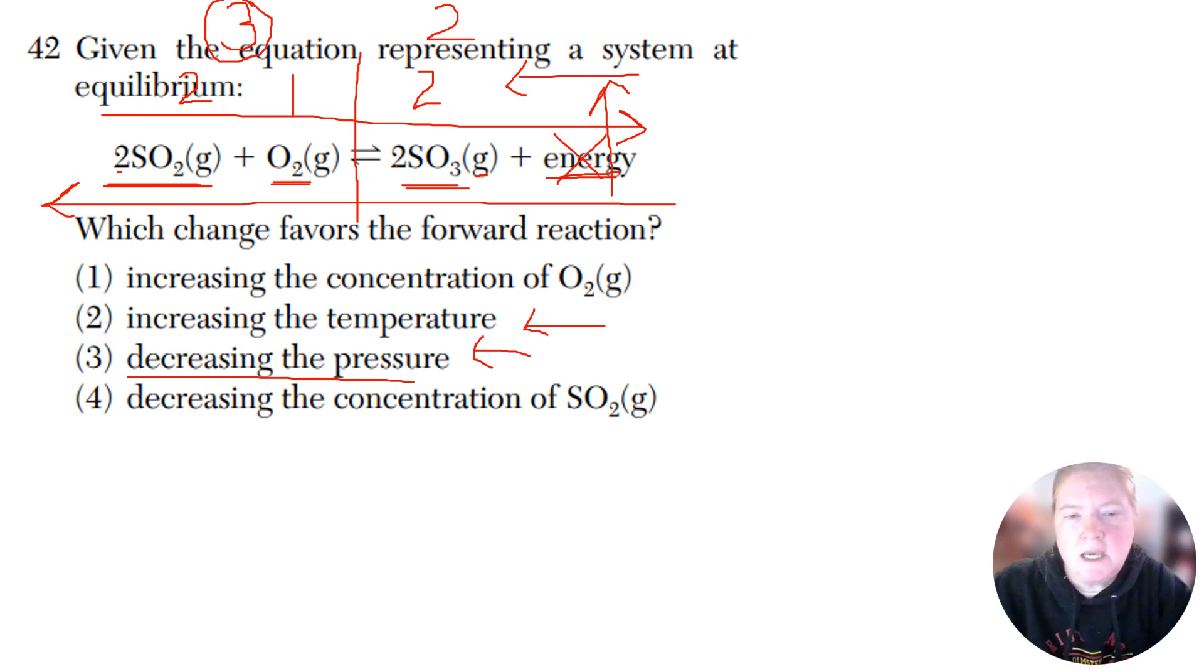If I increase the concentration of O2, I need to use it up. And so I go this way. And then if I decrease SO2, I'm running out. How do I solve it? Quick, make more. So go toward it. So I go this way.